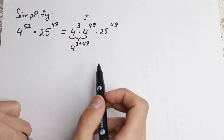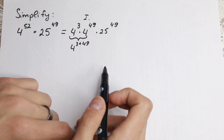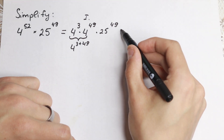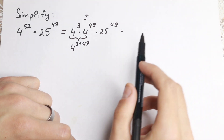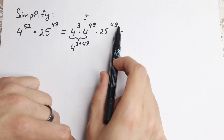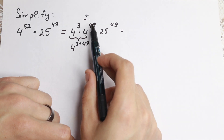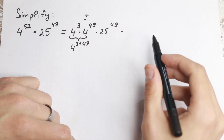Let's go further. Right now we need to know the second really good property. If we have different bases but the same power, we can easily group them and raise to that power.